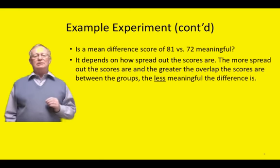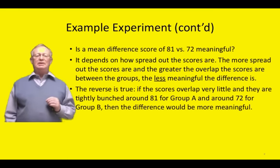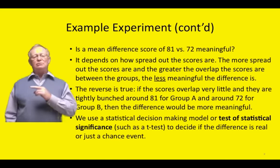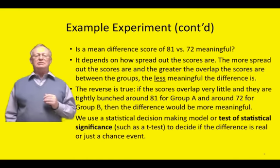Of course, the reverse is true. If the scores overlap very little, and they are tightly bunched around 81 for group A and around 72 for group B, then the difference would be more meaningful. We need to use a decision-making model, or a test of statistical significance, such as the t-test, to decide if the difference is real or just a chance event. And we'll take up statistical decision-making in a later lecture.